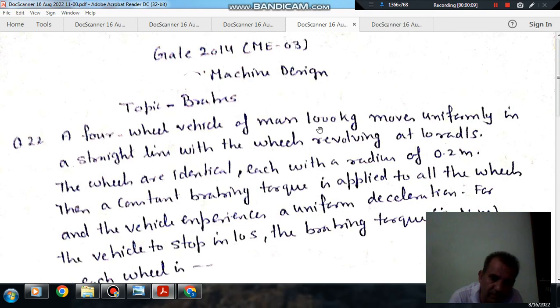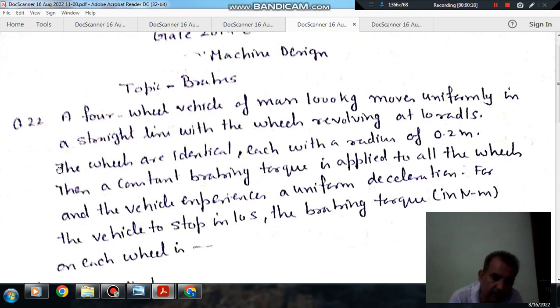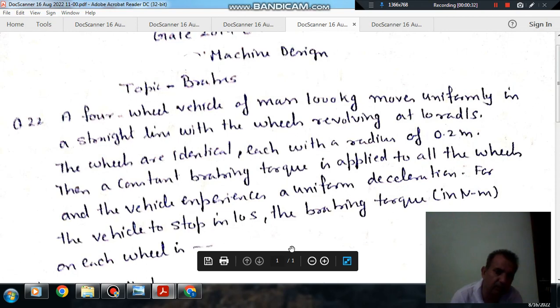A four-wheel vehicle of mass 1000 kg moves uniformly in a straight line, with the wheels revolving at 10 radians per second. The wheels are identical, each with a radius of 0.2 m. Then a constant braking torque is applied to all the wheels, and the vehicle experiences uniform deceleration. For the vehicle to stop in 10 seconds, the braking torque in Nm on each wheel is?